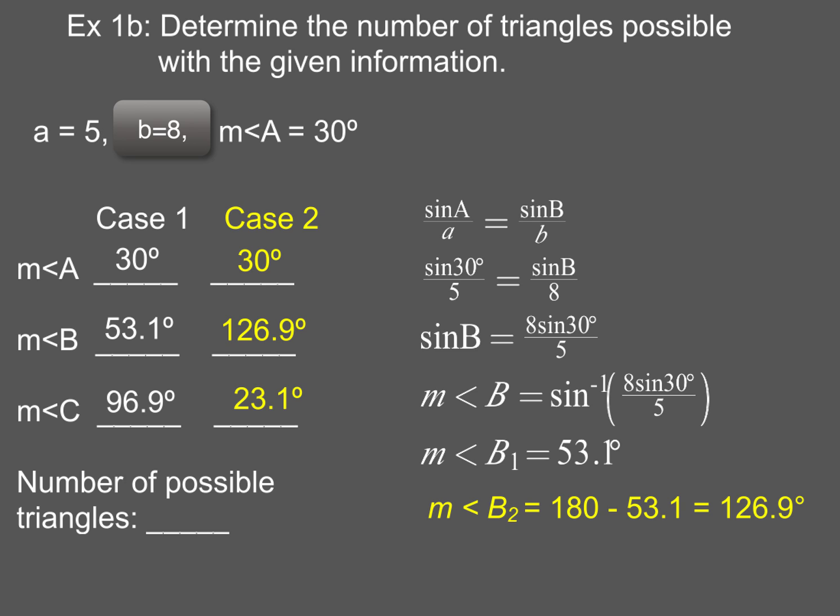So that means in this particular situation, I not only have one triangle, I have two possible triangles. Now we've done an example with one triangle. We've done an example of two triangles. So you know the next example, I'm going to show you how to find one where your possibility is no triangles.